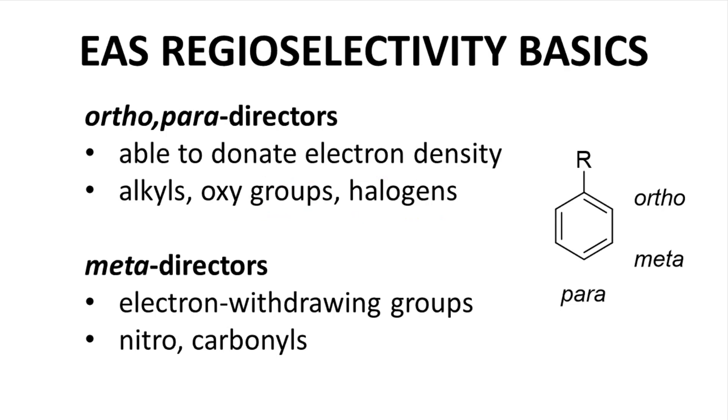In contrast, if the R group is a meta-director, then the new group will prefer to bind to the meta-position. Meta-directors are generally electron withdrawing groups and include nitro, carbonyls, and nitriles. Those are the main ideas. Let's now apply these ideas to a series of reactions pulled from the literature.